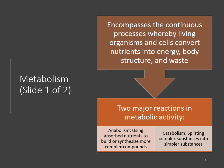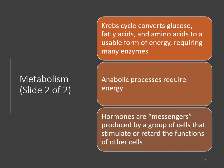Catabolism is splitting complex structures or substances into simpler substances, so catabolism breaks things down. The Krebs cycle, also called the citric acid cycle or TCA cycle, converts glucose, fatty acids, and amino acids to a usable form of energy, requiring a bunch of enzymes and maybe a couple coenzymes. We need those vitamins and minerals. Anabolic processes require energy, so in order to build anything — muscle, heal tissue, or grow a baby — you need that energy.